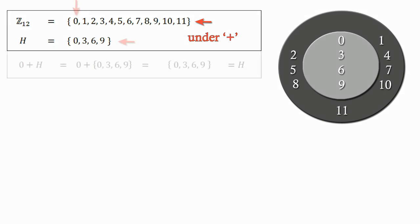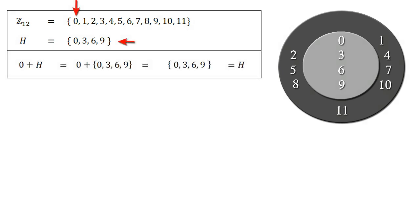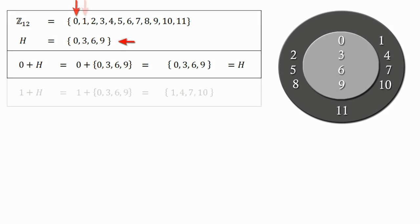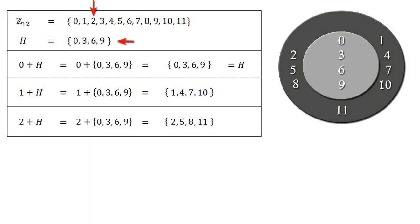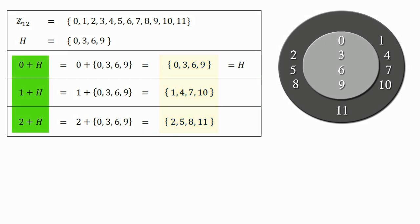First, choose 0 from Z12 and add it to H — we end up getting this set. Choose 1 from Z12 and add it to H — we end up getting this set. Choose 2 from Z12 and add it to H — we end up getting this set. Observing these three sets, we find we have obtained all the numbers of Z12, so we stop. These three sets are the left cosets of the subgroup H of Z12.